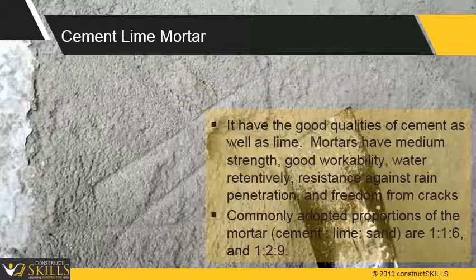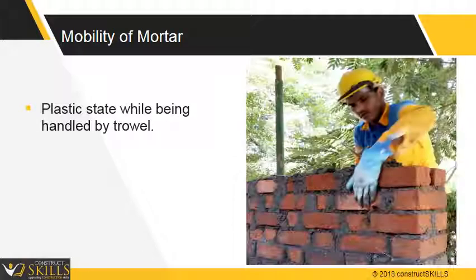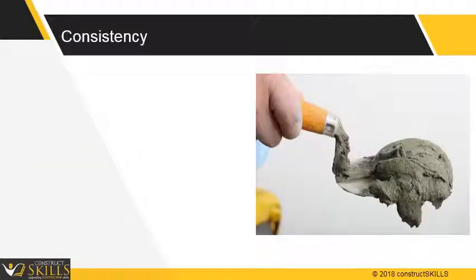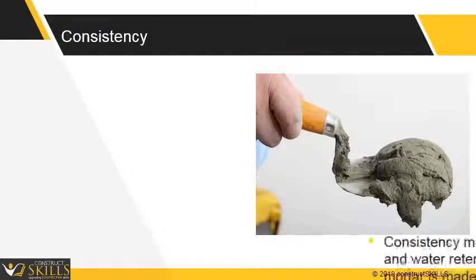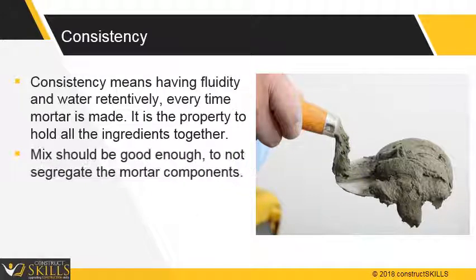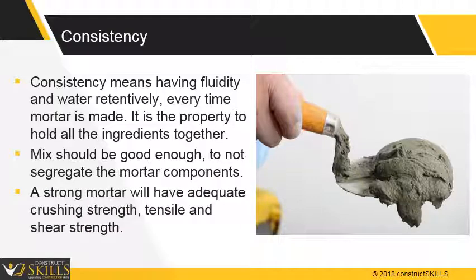In the rest of the lecture, we will be discussing cement mortar. Mortar should be in a plastic state while being handled by trowel. When mortar is placed between the bricks, it should flow through to all parts of the brick layers to remove air voids. The two main characteristics of mortar are consistency and workability. Consistency means having fluidity and water retentivity every time mortar is made; it is the property to hold all the ingredients together. The mix should be good enough not to segregate the mortar components. A strong mortar will have adequate crushing strength as well as adequate tensile and shear strength.